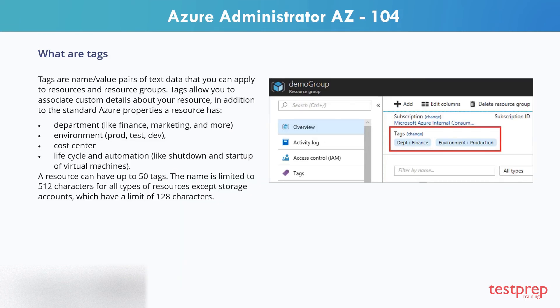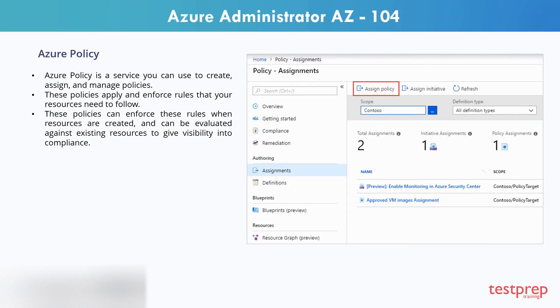Tags are name-value pairs of text data that you can apply to resources and resource groups. Tags allow you to associate custom details about your resource. A resource can have up to 50 tags. Azure Policy is a service you can use to create, assign, and manage policies. These policies apply and enforce rules that your resources need to follow. They can enforce rules when resources are created, and can be evaluated against existing resources to give visibility into compliance.